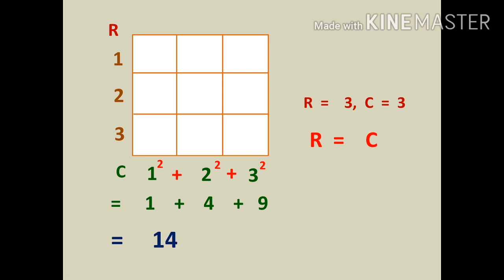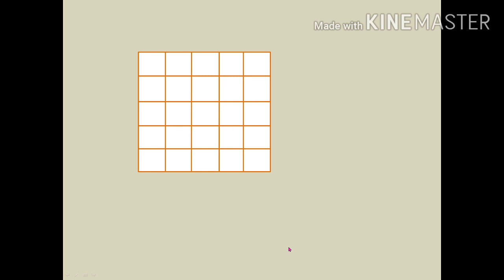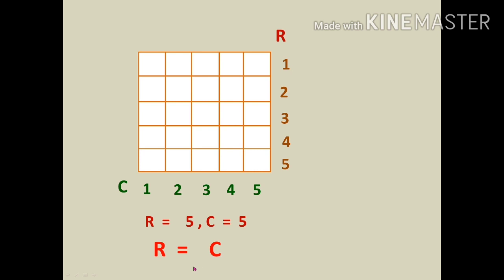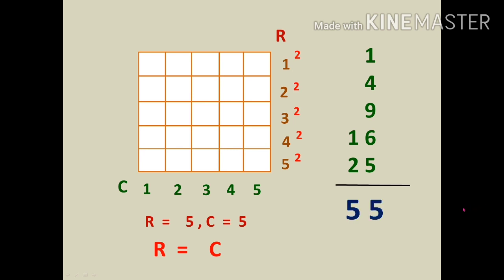Let's see one more problem. Count the rows and columns and write the numbers in the series: 1, 2, 3, 4, 5. Here r = 5 and c = 5 — they are equal. Square each number: 1² = 1, 2² = 4, 3² = 9, 4² = 16, 5² = 25. Adding all gives 55. So the total number of squares in this image is 55.